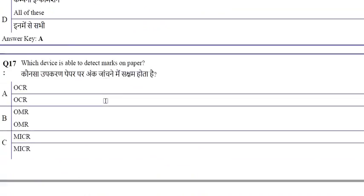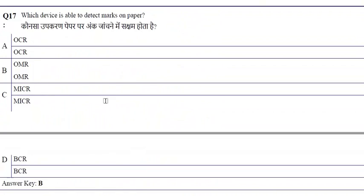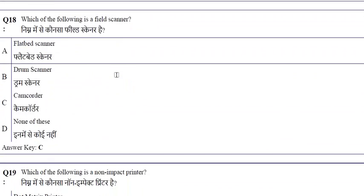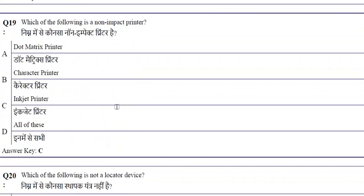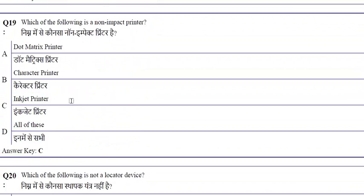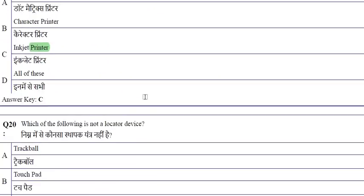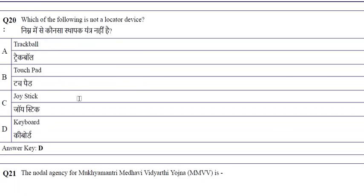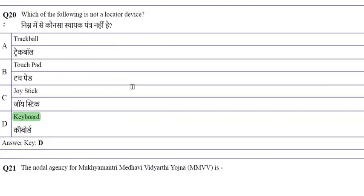OMR is the device able to detect marks on paper. Camcorder is a field scanner. Inkjet printer is a non-impact printer. Keyboard is not a locator device — trackball, touchpad, and joystick are locator devices.